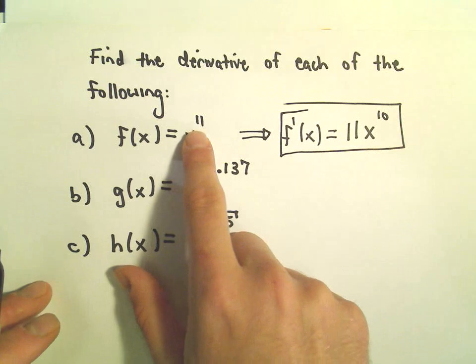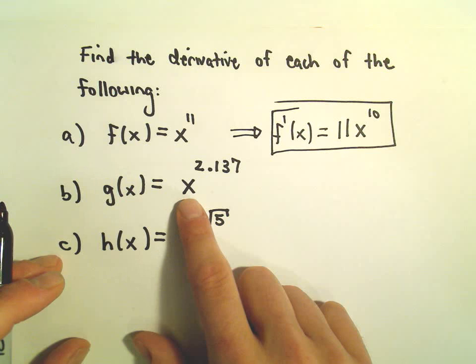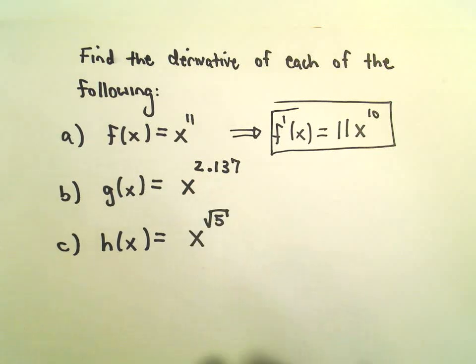This is true, it doesn't have to be a nice whole number. So in part B, we have g of x equals x raised to the 2.137.